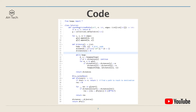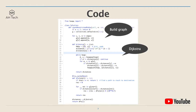The first part of the code is to build a graph based on the input edges using a hash map adjacency list. Next, we create a Dijkstra function which generates a distance array representing the shortest distance from each node to the last node.